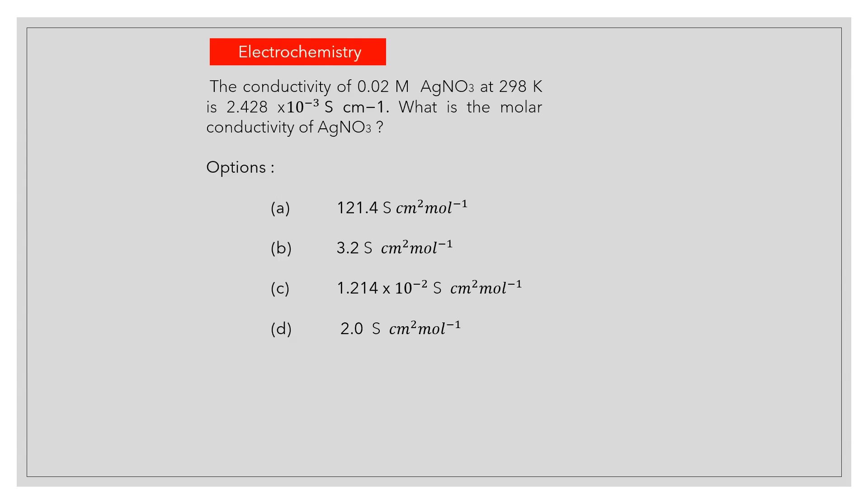The conductivity of 0.02 molar AgNO3 at 298 Kelvin is 2.428 × 10^-3 Siemens centimeter inverse. What is the molar conductivity of AgNO3? Answer A: 1.214 Siemens cm squared mole inverse.